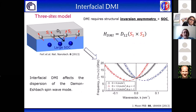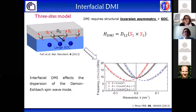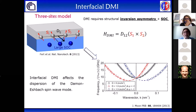In this work, we have studied the interfacial DMI in cobalt iron boron films grown on BTO substrates using Brillouin light scattering. Brillouin light scattering has been largely used recently to study the interfacial DMI, exploiting the fact that the interfacial DMI affects the dispersion of the Damon-Eshbach mode. Before describing the results of our work, I would like to spend some words about the Damon-Eshbach mode and Brillouin light scattering.